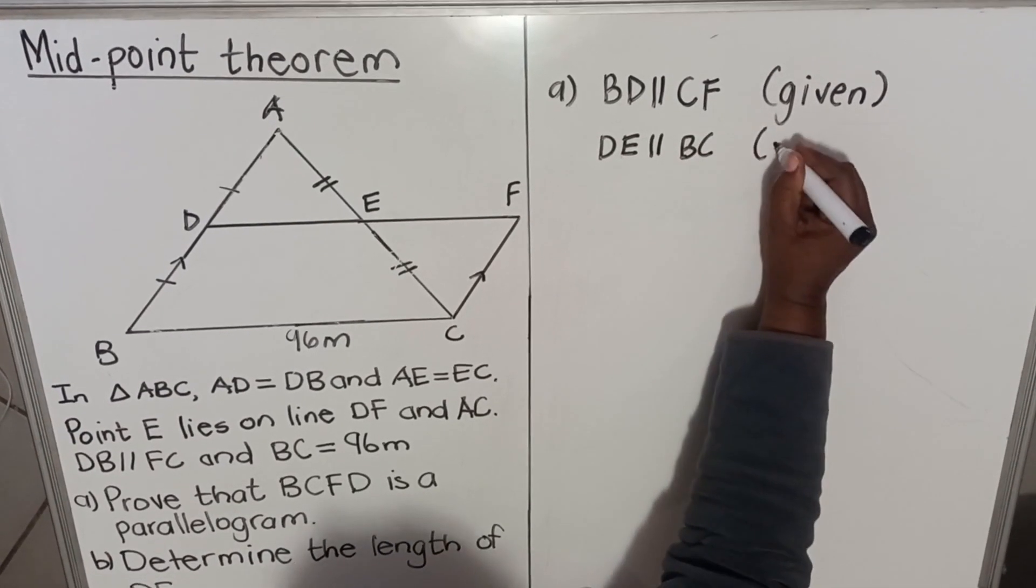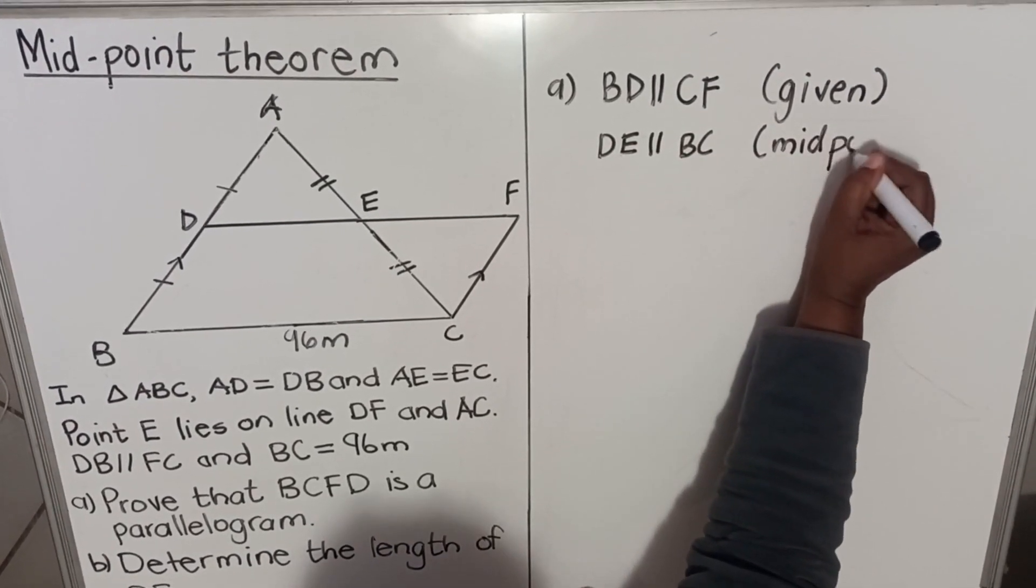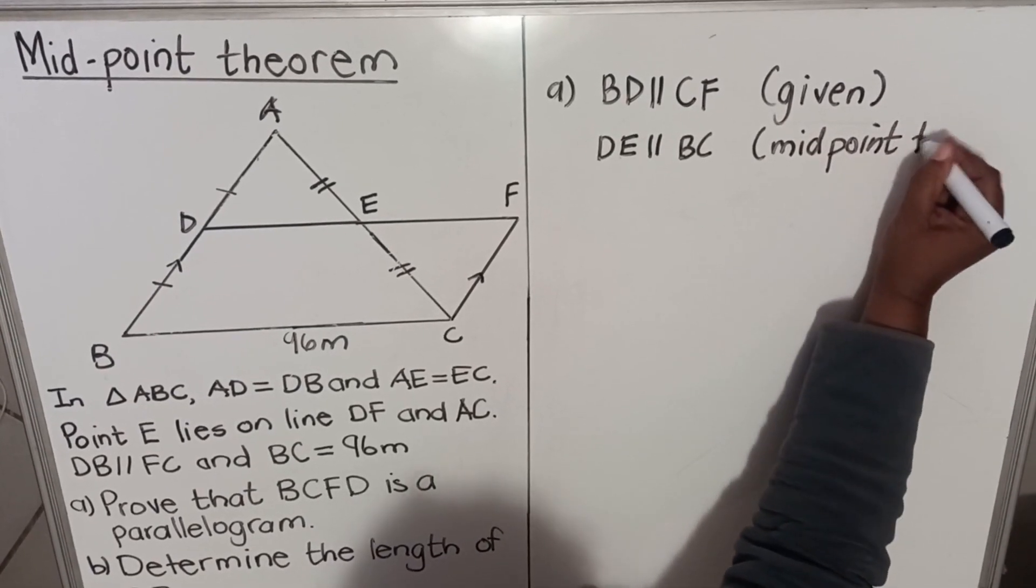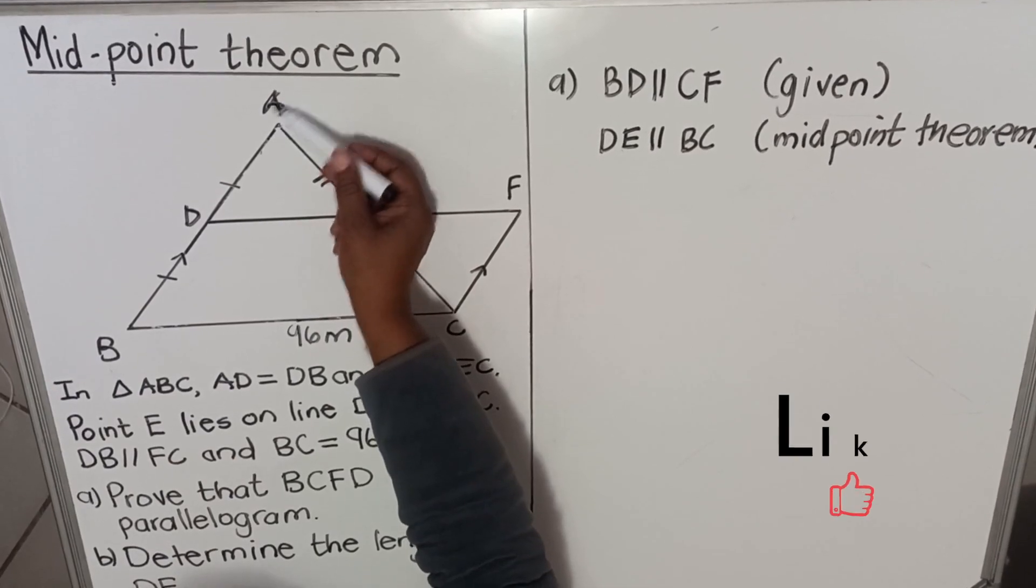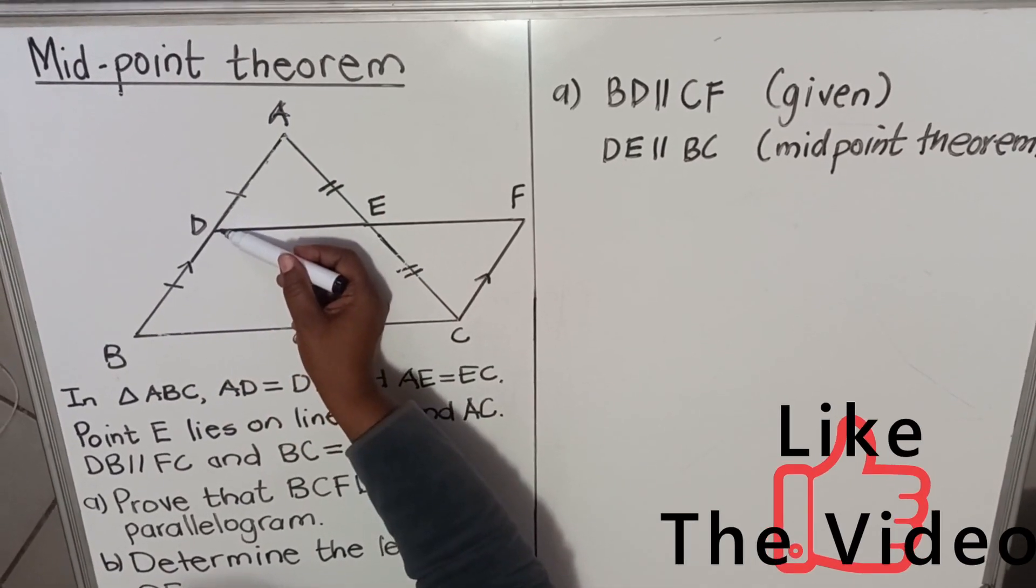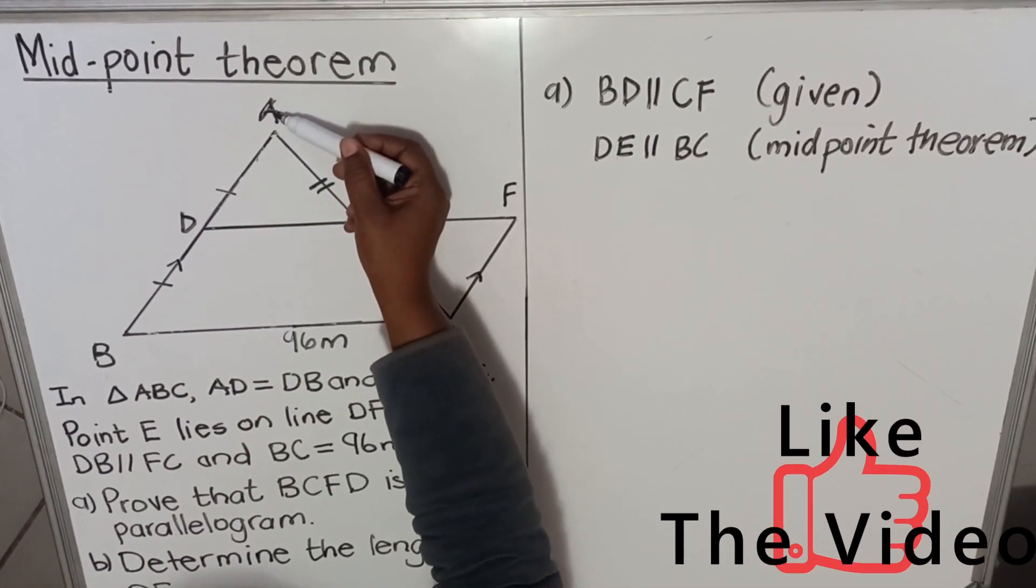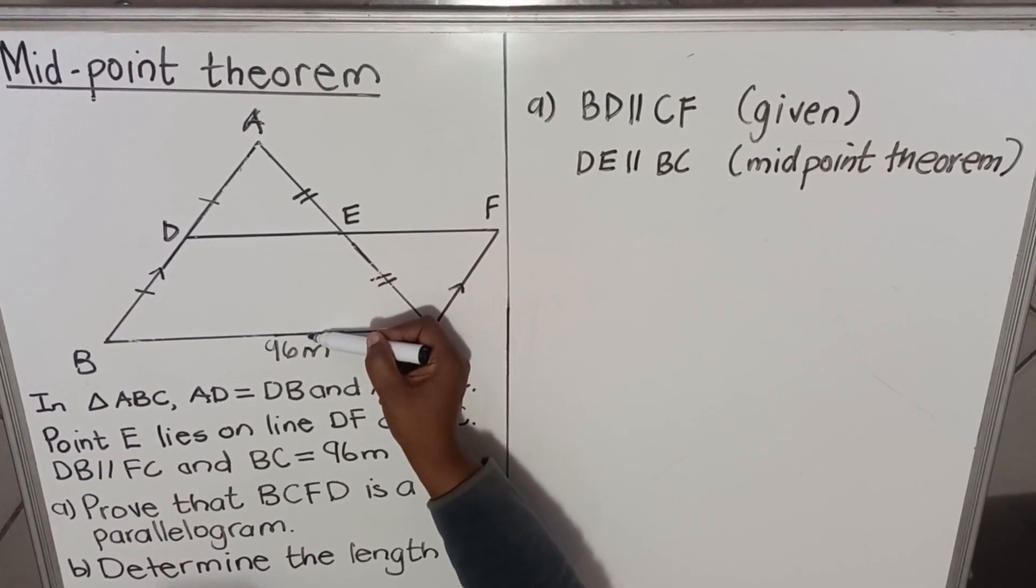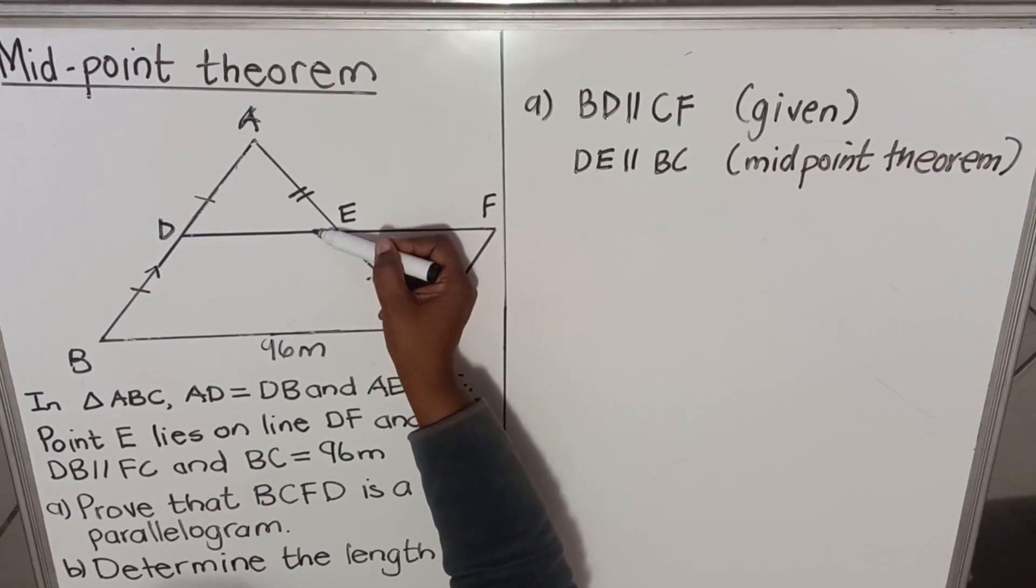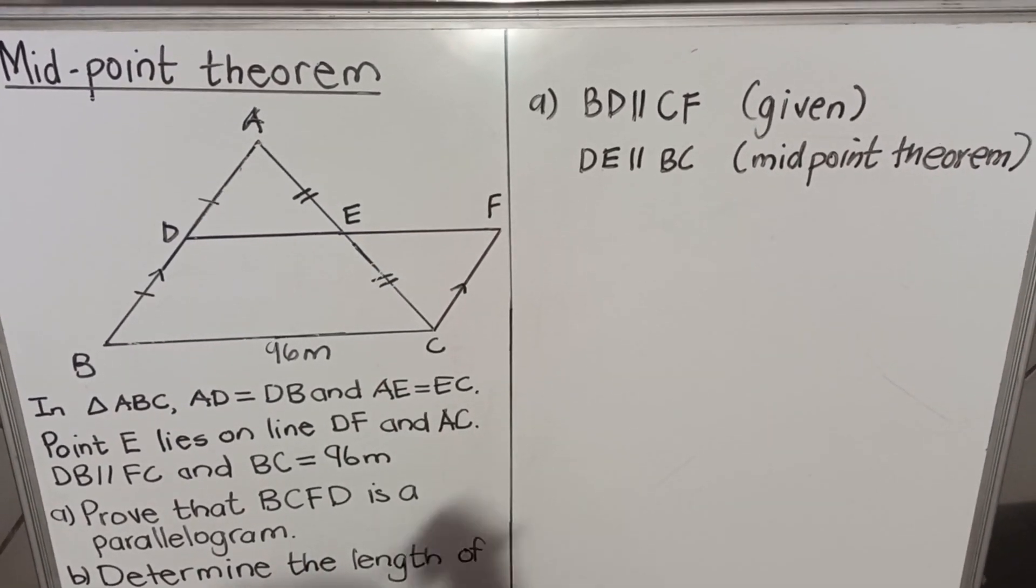Reason: midpoint theorem. When you look at this line AB, it has a midpoint at D, and the other side AC has a midpoint at E. Even though they didn't give you these two lines that are parallel, because of midpoint theorem, then you can say that they are parallel.